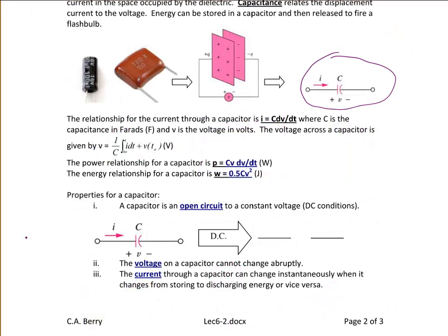The formula relating current and voltage for a capacitor is I equals C dV/dt. To solve for voltage: V equals 1 over C, the integral from T0 to T of I dt, plus V of T0. V of T0 represents the initial voltage across the capacitor, since capacitors store energy in the form of voltage. The power relationship is C·V·dV/dt, found by multiplying V times I, and the energy is 0.5·C·V², found by integrating the power.